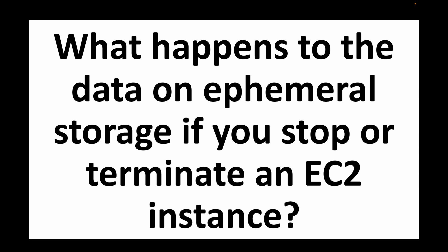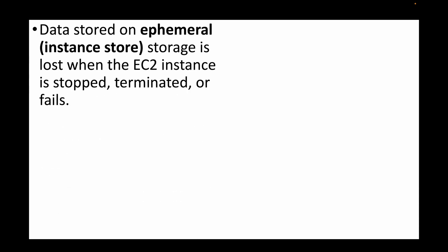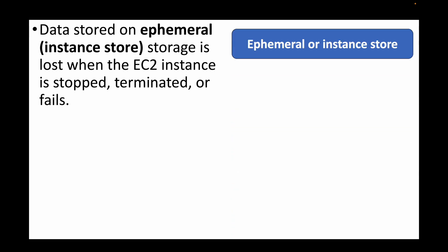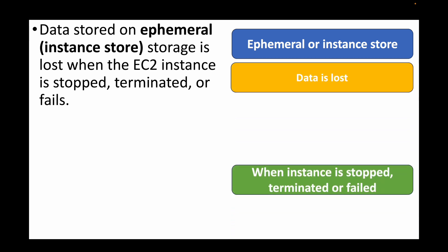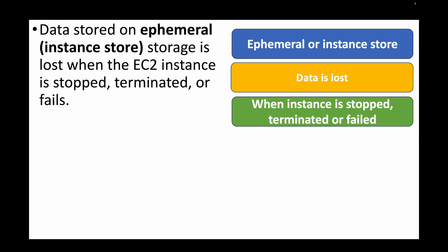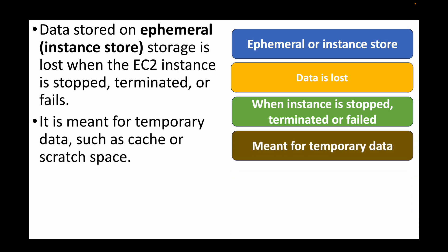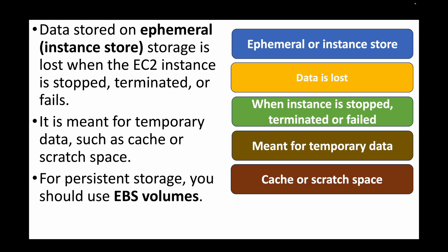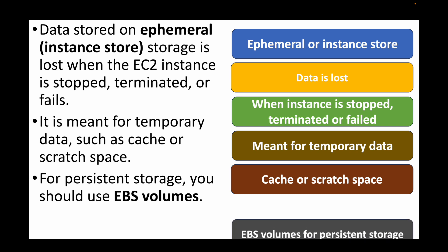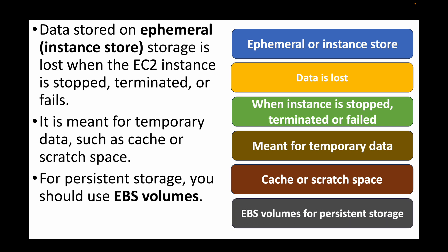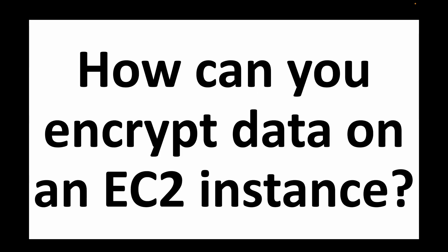The next question is: what happens to data on ephemeral storage if you stop or terminate an EC2 instance? Ephemeral storage is your instance store data — the data is available only as long as the instance is running. If you stop or terminate the instance, the data is lost. Ephemeral storage is mainly meant for temporary data like cache data or scratch space; if you need to persist data, use EBS volumes.